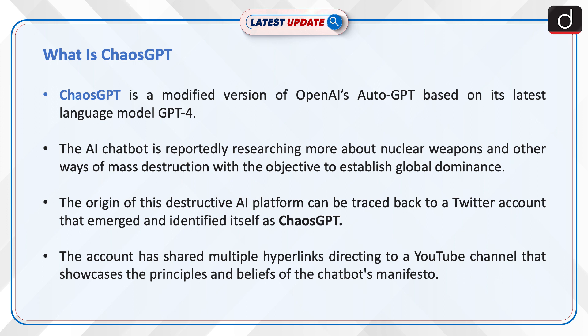This AI chatbot is reportedly researching nuclear weapons and other ways of mass destruction, with the objective to establish global dominance. The origin of this destructive AI platform can be traced back to a Twitter account that emerged and identified itself as Chaos GPT.